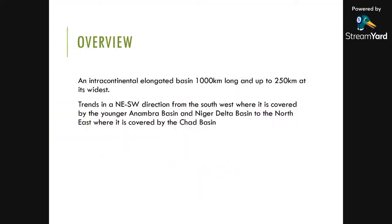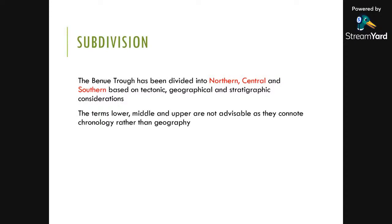The Benue Trough is an intracontinental elongated basin, 1,000 kilometers long and up to 250 kilometers at its widest. It trends northeast-southwest from the southwest — where it is covered by the younger Anambra and Niger Delta basins — to the northeast, where it is covered by the Chad Basin. It can be divided into northern, central, and southern segments. In older literature, the terms lower, middle, and upper were used to represent southern, central, and northern respectively.